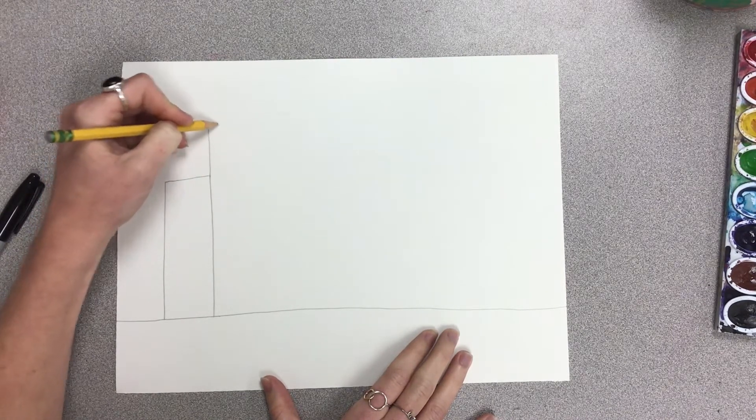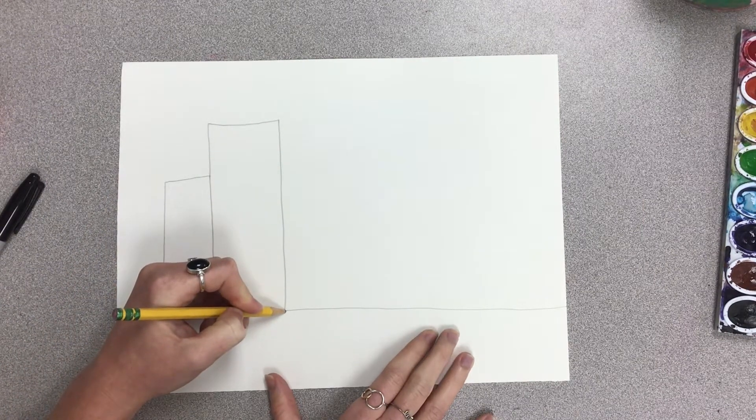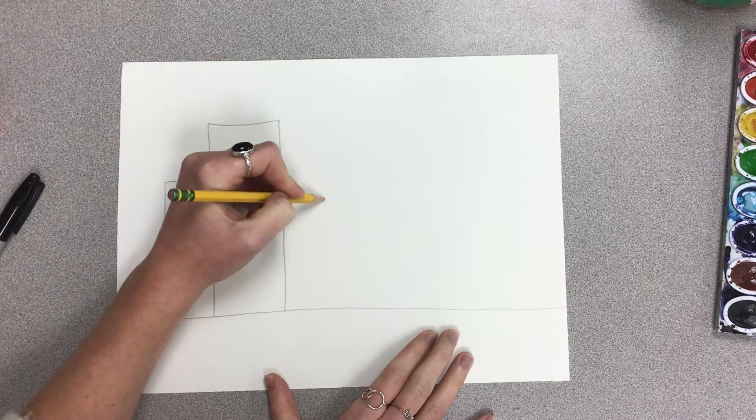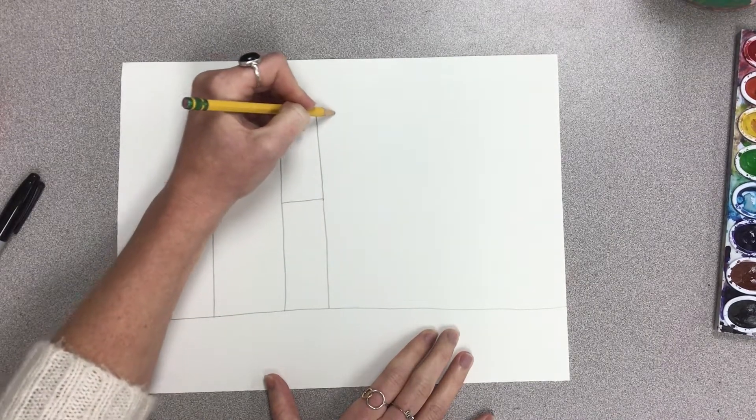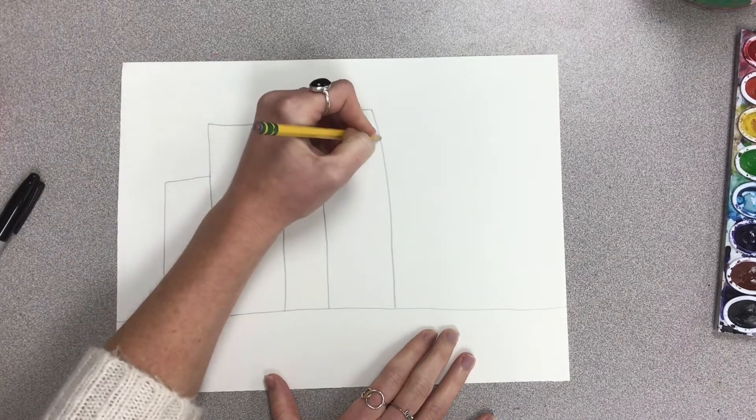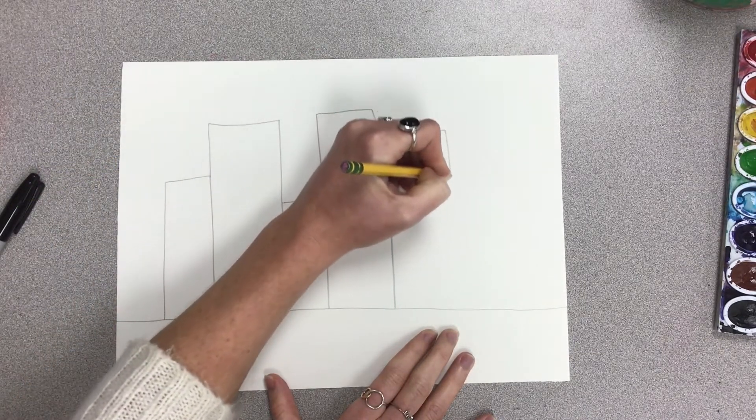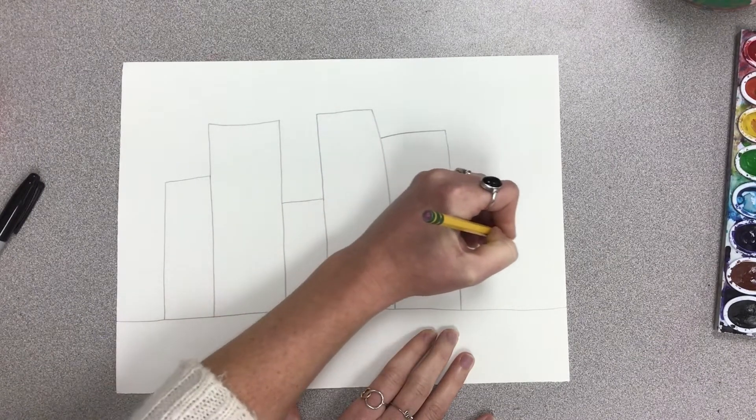You can have big ones, small ones, medium-sized ones, any size that you want. They can be touching. You can have maybe a little pathway between them so they're not touching. It's up to you how you design your buildings. I'm doing some big, some little, and one little one at the end.